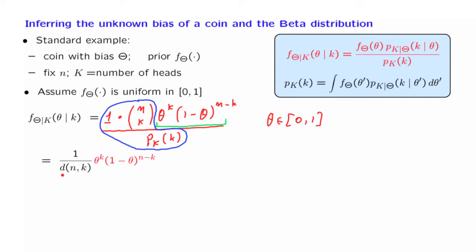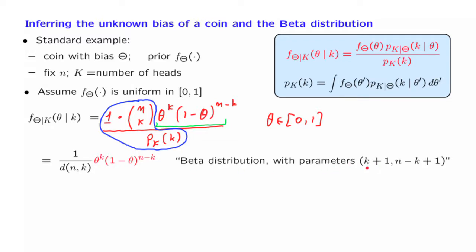This particular form of the posterior distribution for theta is a certain type of density that shows up in various contexts, and for this reason it has a name: it is called a beta distribution with certain parameters. The parameters reflect the exponents in the two terms, augmented by 1 — which is a historical convention. The important thing is to recognize what it takes for a distribution to be a beta distribution: the dependence on theta is of the form theta to some power times 1 minus theta to some other power.